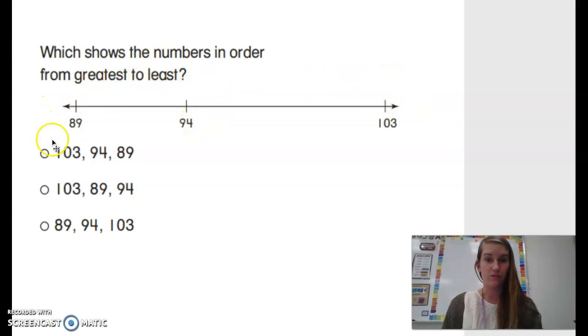On our open number line for us. Remember, left is least to greatest. So here we have the number 89, 94, 103. The question asks shows the number in order from greatest to least.